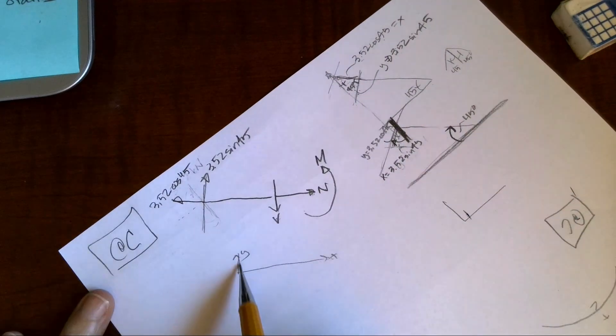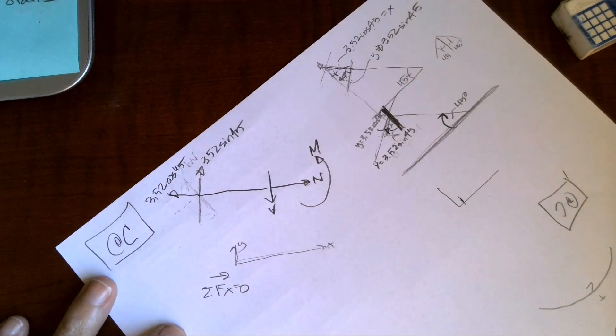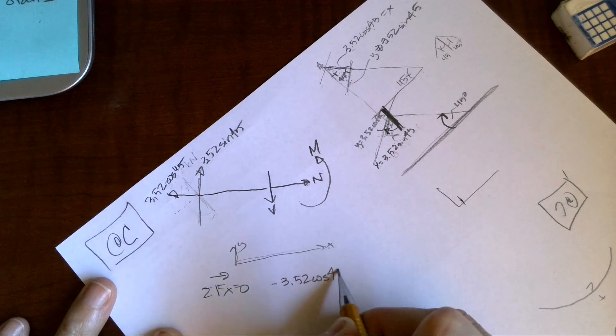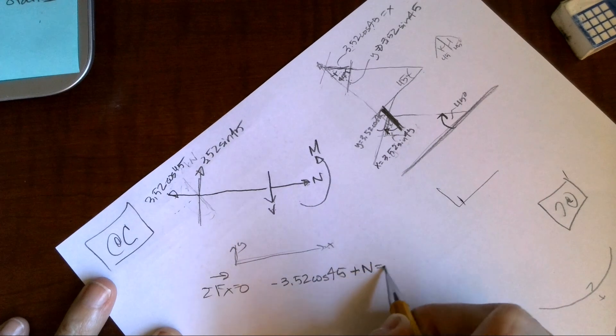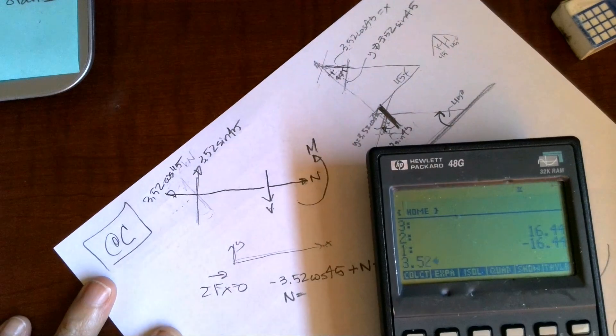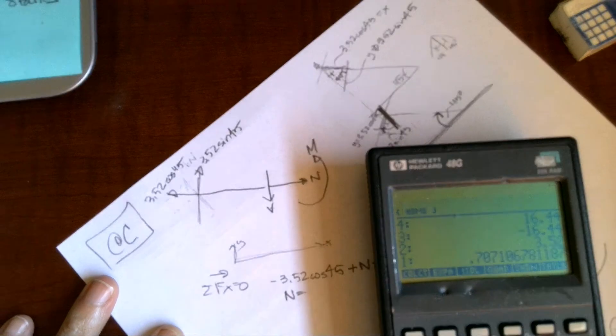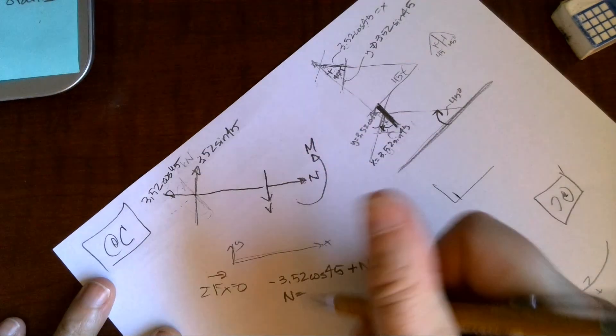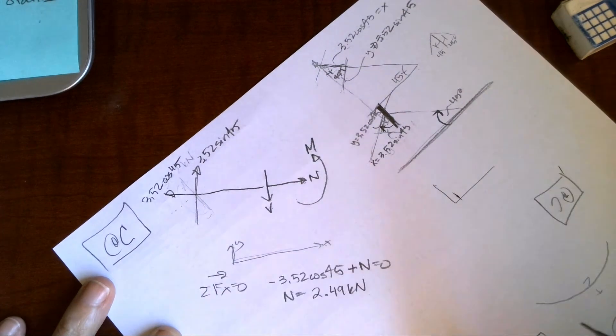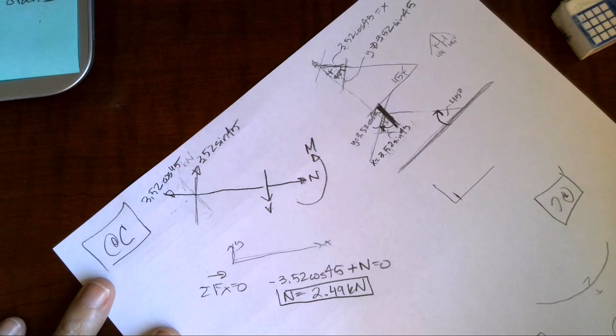When I look at this, I can now sum my forces in the x direction. They have to equal zero. I'm going to get negative 3.52 cosine 45 plus normal equals zero. So I get that my normal force is 3.52 cosine 45, which equals 2.49. I get a positive value, so that lets me know it's a tension member.